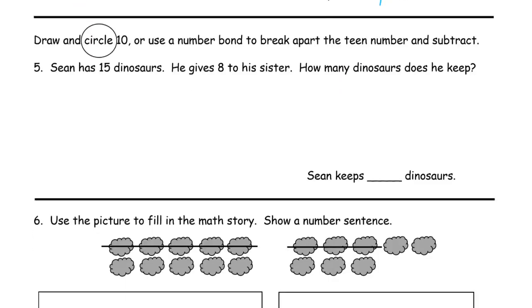Draw and circle 10. Use a number bond to break apart the teen number and subtract. Or, draw and circle 10, or use a number bond. Okay, so I'm going to use a number bond. Sean has 15 dinosaurs.